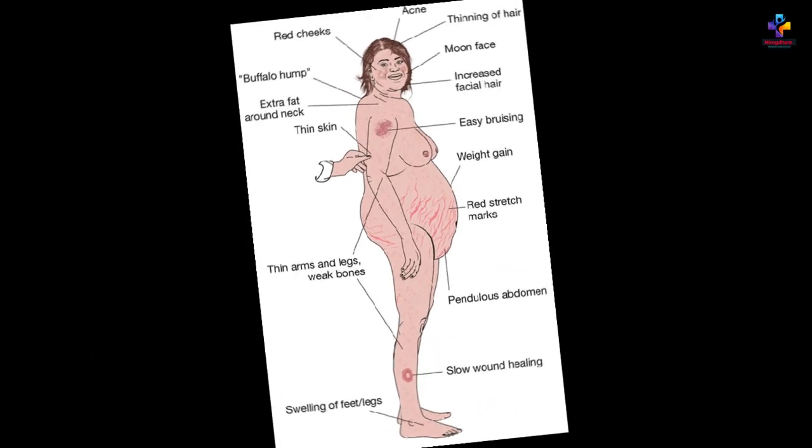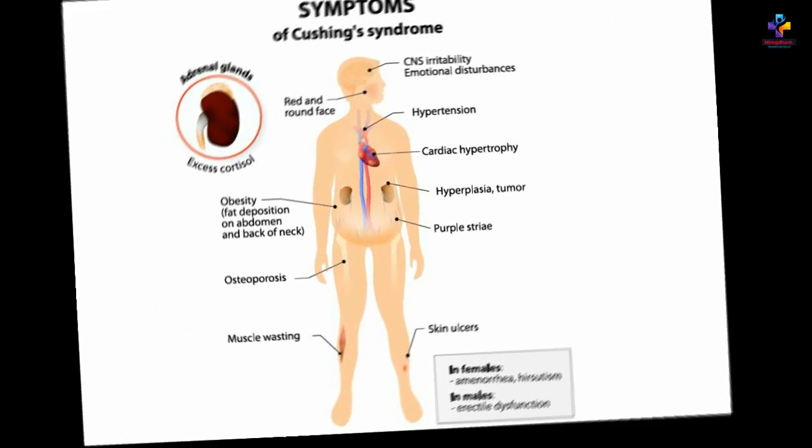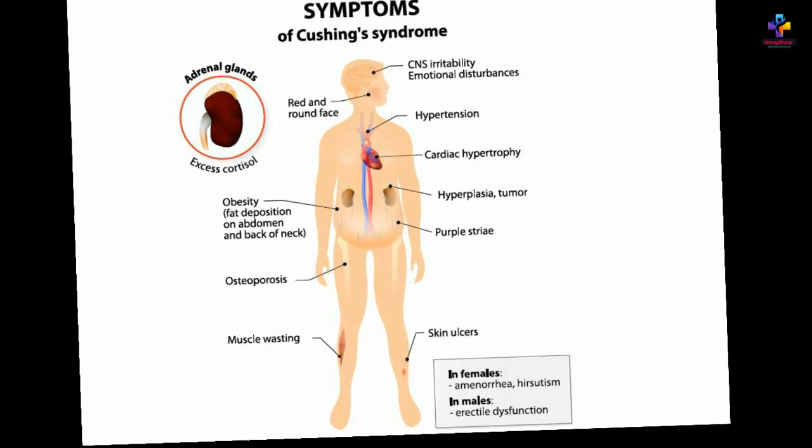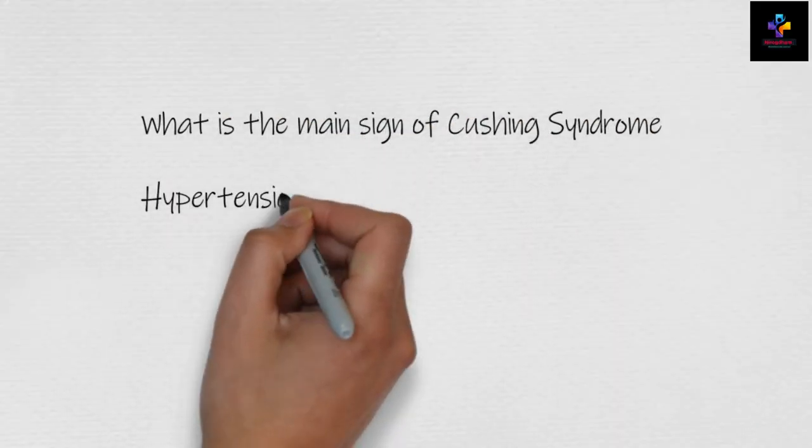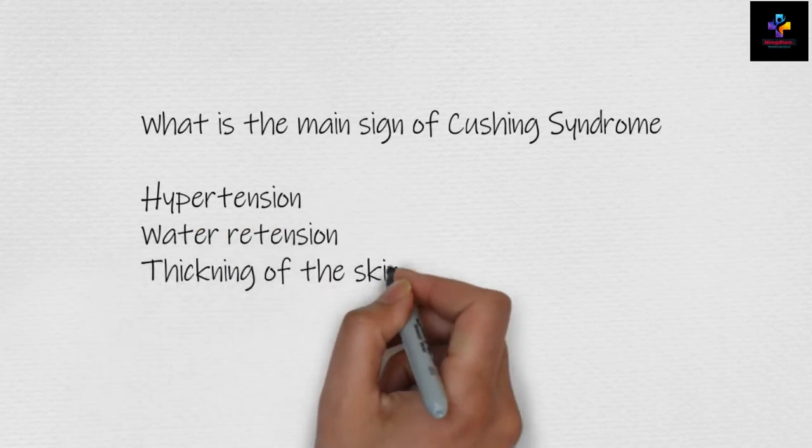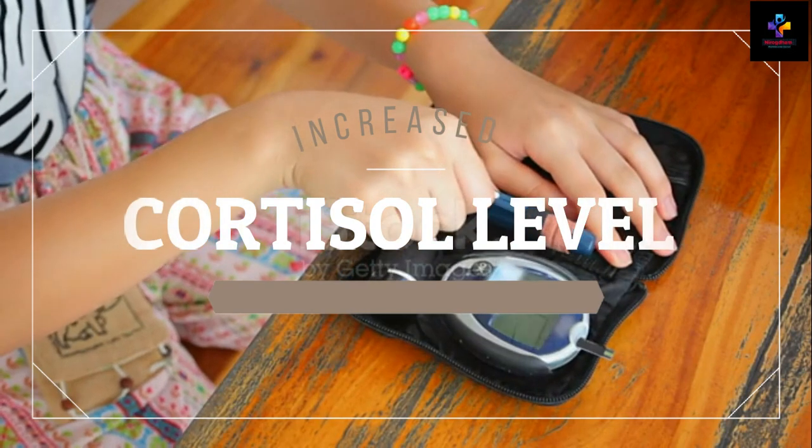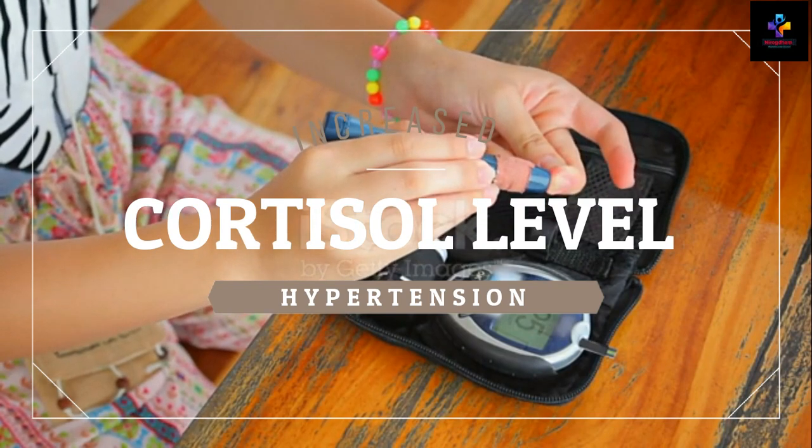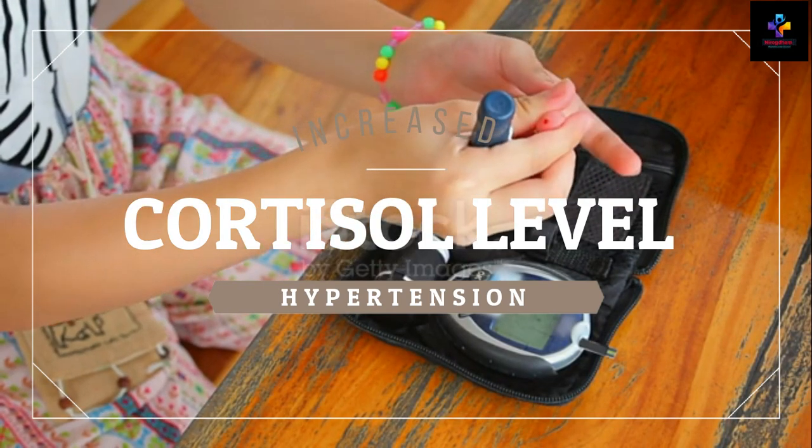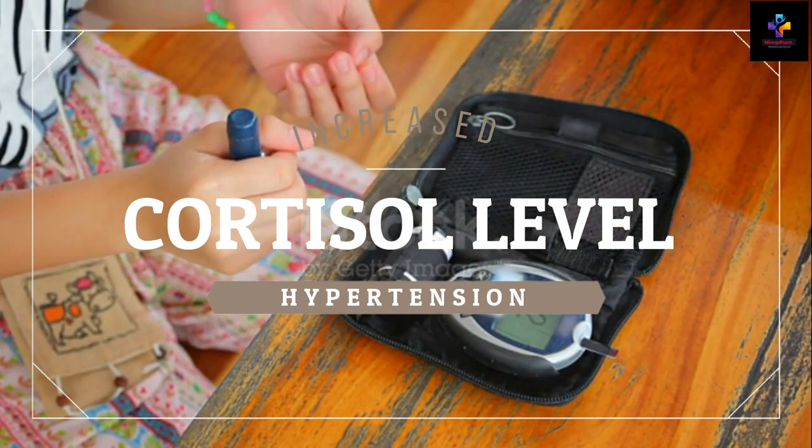The next question was related to the high secretion of cortisol which is known as Cushing syndrome. What is the main sign of Cushing syndrome? Hypertension, salt retention, salt and water retention in the body, thickening of the skin, and hypoglycemia. When there is increase in cortisol, the main features seen in Cushing syndrome are hypertension, the body becomes fatty, and due to disturbed insulin level there is hyperglycemia. Out of these options, hypertension is the best answer.